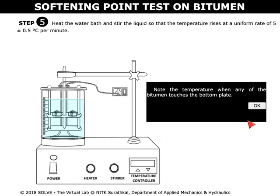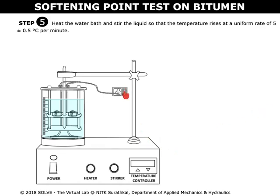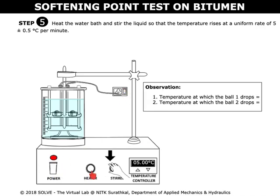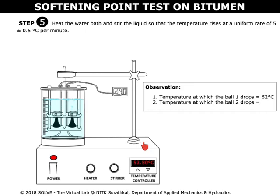Go through the instructions carefully. Switch on the machine and apply heat by clicking on the heater. Click on the stirrer to stir the liquid so that the temperature rises at a uniform rate. Observe the temperature at which ball one and ball two drop.